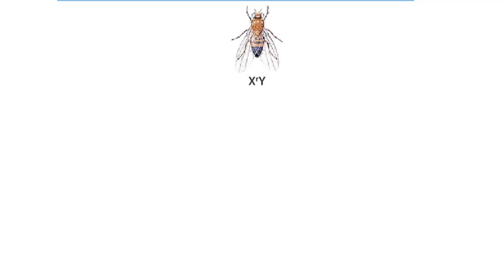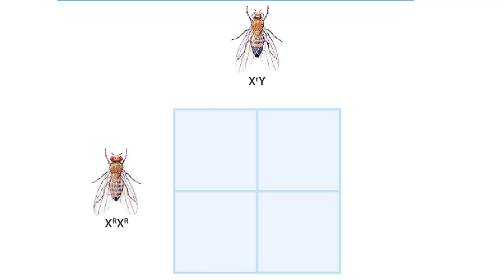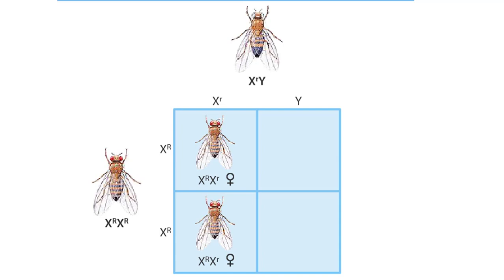When a white-eyed male is crossed with a homozygous red-eyed female, the female offspring receive a dominant red eye color allele from their mother and a recessive white eye color allele from their father. Therefore, they will be heterozygous for red eyes.